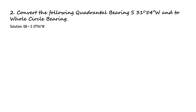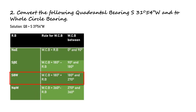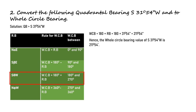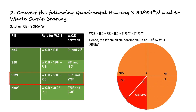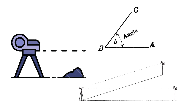Solution: QB equals 31 degrees 54 minutes in the SW quadrant. From the table, the formula is WCB equals 180 plus RB, which equals 180 plus 31°54', giving 211 degrees 54 minutes. Drawing the QB value, it lies in the third quadrant; the WCB measured from north gives 180 plus the reduced bearing, resulting in 211°54'. Hence the whole circle bearing value of S 31°54' W is 211 degrees 54 minutes.